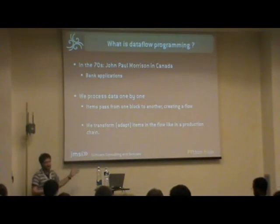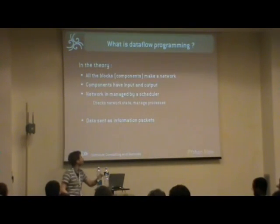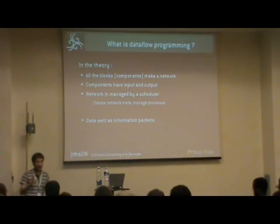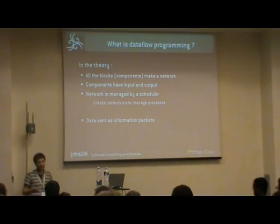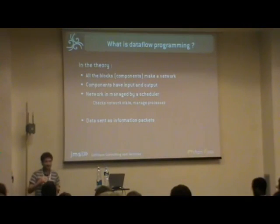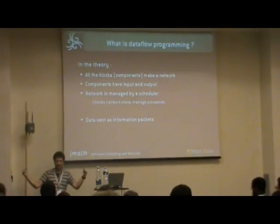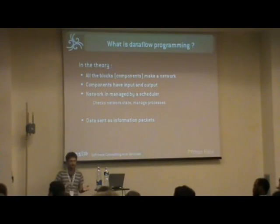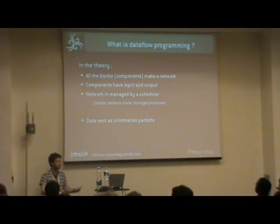And magically, we pass items from one block to another. In the theory, blocks, which are also named components, form a network with links between them. Components have input and output ports. The network is managed by a scheduler. Because at that time, each box was a process with sockets between the boxes. The scheduler was checking if every item was being processed, if every process was still alive.